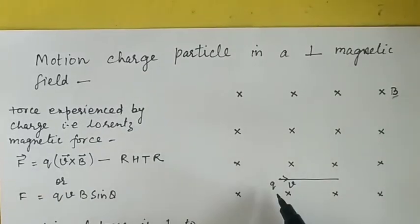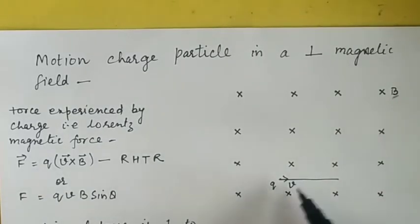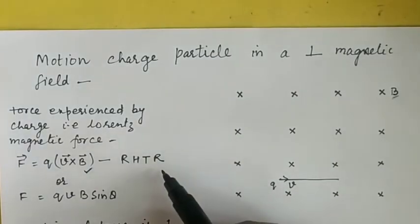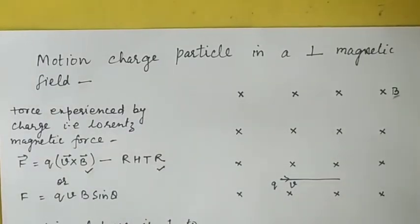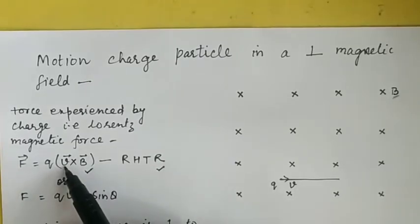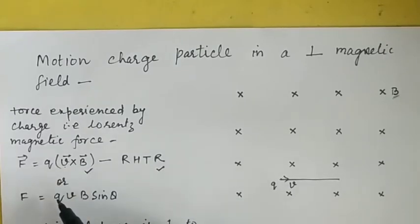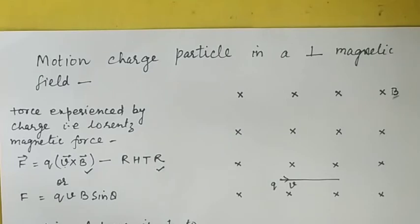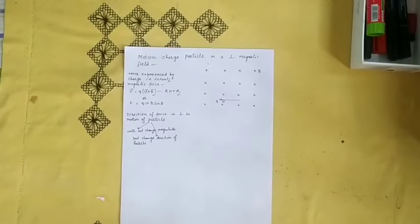Whenever a charged particle moves in a magnetic field, it experiences a Lorentz magnetic force F = QV × B. The direction of this force is given by the right-hand thumb rule: place the fingers and thumb mutually perpendicular to each other and rotate the fingers from velocity to magnetic field — the thumb then represents the direction of the force. We always use the right-hand thumb rule for cross products.